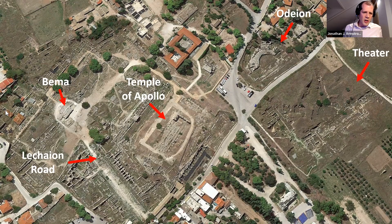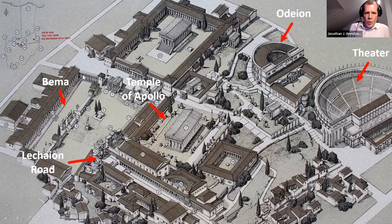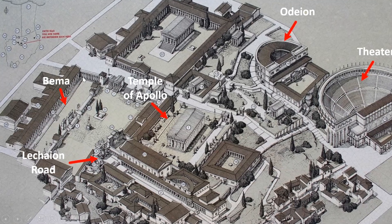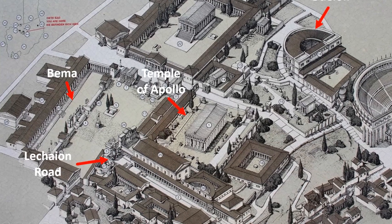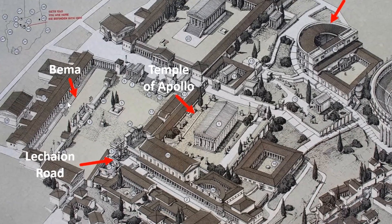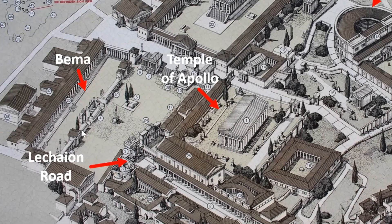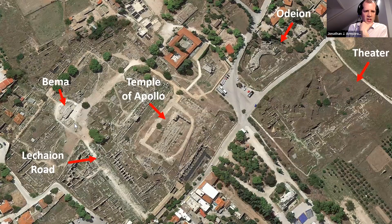Here is the Lechaion Road with its various shops on the side, and here is the so-called Agora — the downtown area where people would gather. You have a number of porches or stoas. The reason these ancient Greek agoras have porches is really just to keep the sun off people. If you've been in Greece in the middle of the afternoon, you know how sweltering the sun can be, so they would have colonnades where people could walk, get out of the sun, and still hold conversations. We'll also talk about the Bema — the place of judgment — which can still be seen today.